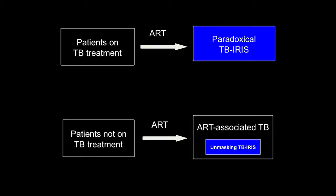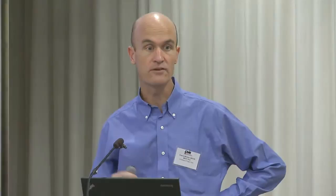By way of background, there are two recognized forms of TB IRIS. The first occurs in patients who are on TB treatment, start ART, and develop clinical deterioration while on effective TB treatment — termed paradoxical TB IRIS. The other is patients who have unrecognized TB when they start antiretroviral therapy; with immune recovery they unmask their TB and present with accelerated inflammatory forms of TB, termed unmasking TB IRIS. I'm going to focus exclusively on paradoxical TB IRIS today.